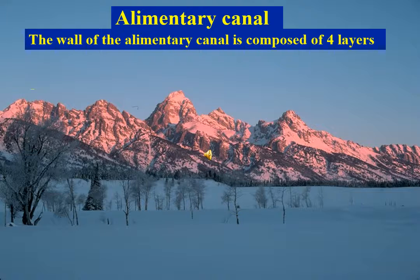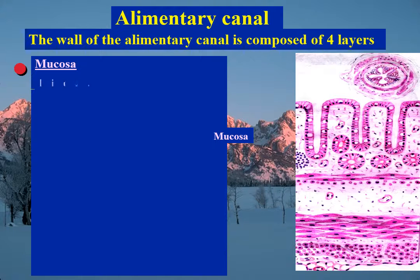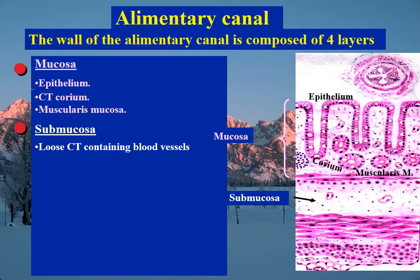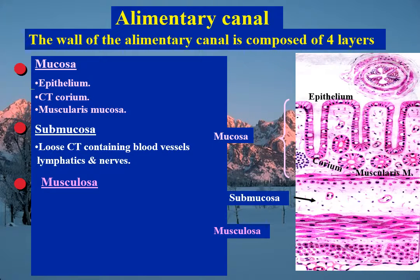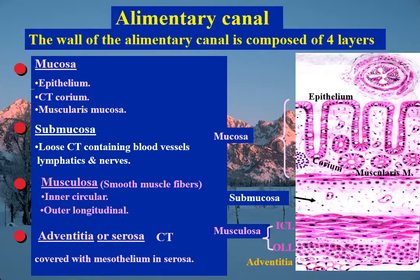The wall of the alimentary canal is composed of four layers. Mucosa consists of epithelium, connective tissue corium, and muscularis mucosa. Submucosa consists of loose connective tissue containing blood vessels, lymphatics, and nerves. Musculosa consists of smooth muscle fibers, usually arranged in two layers — inner circular and outer longitudinal. Adventitia, or serosa, consists of connective tissue covered with mesothelium in cases of serosa.